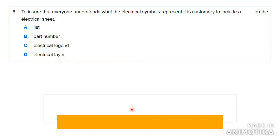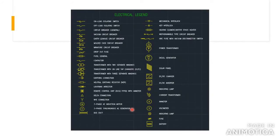Number six: to ensure everyone understands what the electrical symbols represent, it is customary to include a blank on the electrical sheet. Electrical drawings have different symbols to show 110 plugs, lighting, and everything related to the building's electrical path. What you need to understand all those symbols is an electrical legend. Here you have an example of an electrical legend with symbols on the left and their descriptions. The answer is an electrical legend.